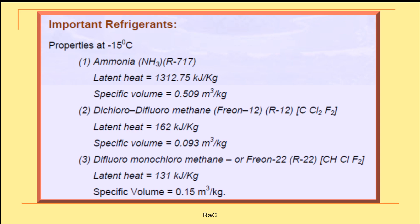Common refrigerants in use include R717 (Ammonia), R12 (Freon 12, Dichlorodifluoromethane), and R22 (Freon 22), which have been used since refrigeration was invented. Nowadays these have been replaced by R134a and R410A as zero-ODP refrigerants. Newer refrigerants are under research to eliminate global warming potential and ozone depletion potential by removing CFCs and HCFCs containing fluorine and chlorine.